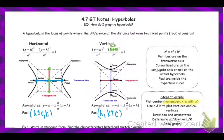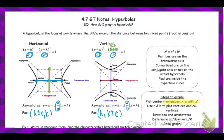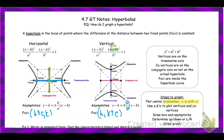The last part here is the equation of the asymptotes. The biggest thing to look at is the slope. On the horizontal equation, the slope is b over a. On the vertical, the slope is a over b. The reason it changes: slope is rise over run, y's over x's. On the horizontal equation, b is under the y and a is under the x. For the vertical, a is under the y and b is under the x — which is why for vertical it's a over b, and for horizontal it's b over a. The rest of the equation is just point-slope form with the center, since the asymptotes cross at the center of the hyperbola.